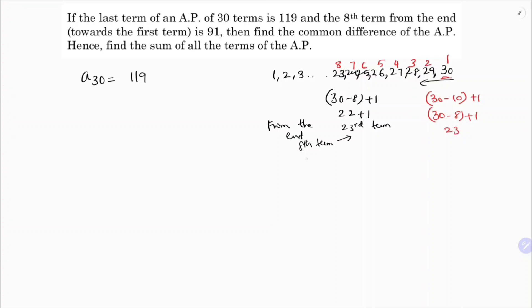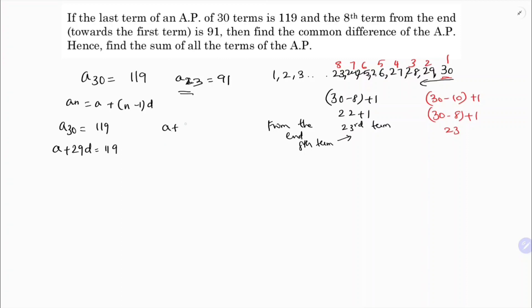So a₂₃ is 91. Now using the nth term formula: aₙ = a + (n−1)d. For a₃₀: a + 29d = 119. For a₂₃: a + 22d = 91, since 23 minus 1 is 22.